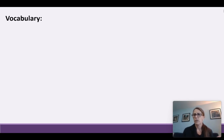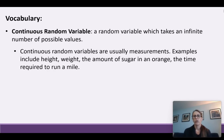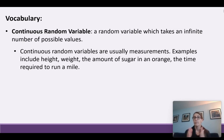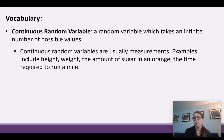Some vocabulary — some of these terms we've seen before. In chapter 5, we were introduced to continuous random variables, which are variables that take on an infinite number of possible values. These are usually measurements — things like height, weight, the amount of sugar in an orange, or the time required to run a mile. So instead of counting something, we're measuring it, so we can have all the values in between the whole numbers as well.